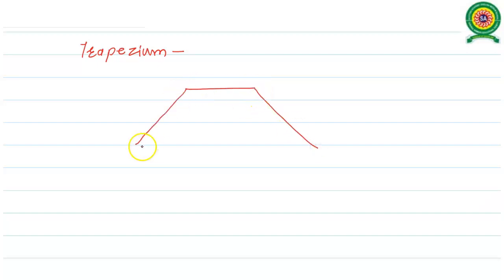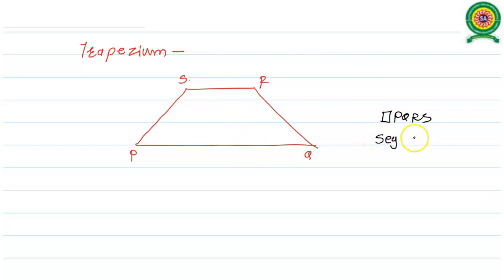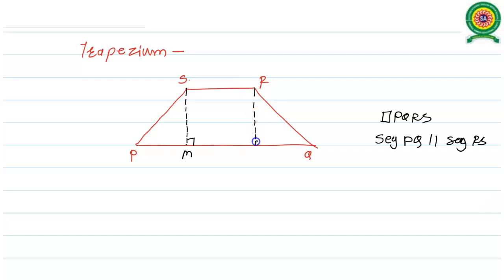A trapezium may look like this. We are having trapezium PQRS. In the quadrilateral PQRS, once we are having one pair of opposite sides, that is segment PQ which is parallel to segment RS, so that given quadrilateral is a trapezium. Now to evaluate the area of a trapezium, let us draw the perpendicular from vertex S on its opposite side PQ. Let SM be the perpendicular on PQ. Similarly, let us draw the perpendicular from point R on PQ, and we call it RM. Now the trapezium is divided into three parts.